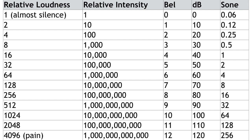So here's a table that shows loudness, intensity, bells, and decibels. If one violin has an intensity of 1, a loudness of 1, and a bell of 0, then 10 violins have an intensity of 10, a loudness of 2, and a bell of 1. And 100 violins have an intensity of 100, a loudness of 4, and a bell of 2.